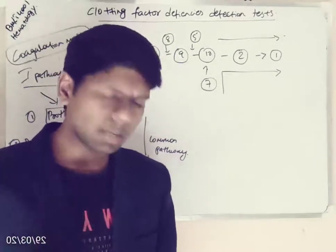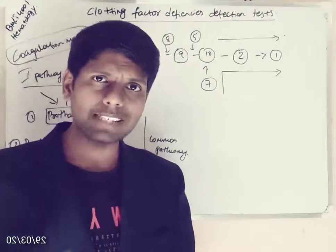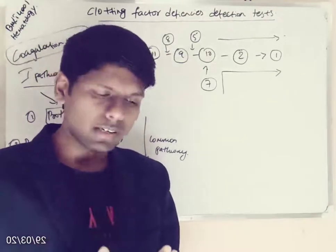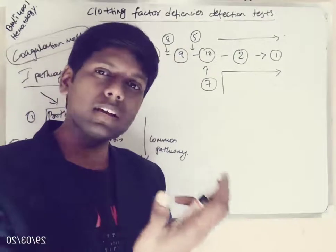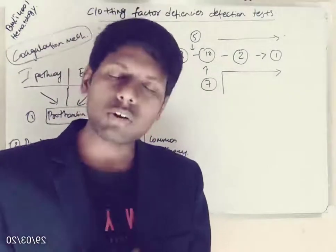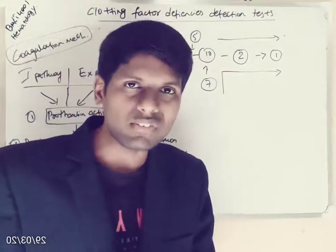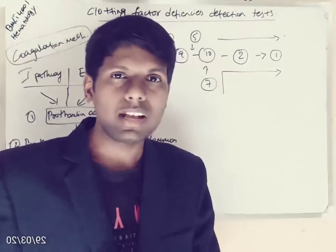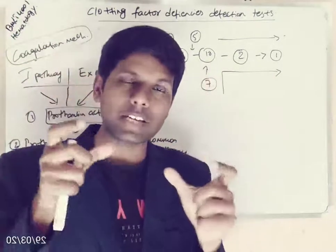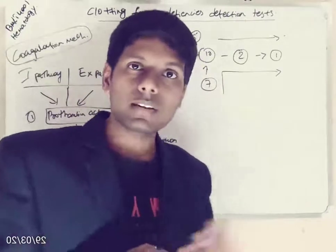I am going to skip the detailed coagulation mechanism. Coagulation mechanism is a process by which fibrinogen is converted to fibrin, mediated by clotting factors. We have 13 clotting factors in our blood and these 13 clotting factors get activated in a series fashion and ultimately form fibrin.